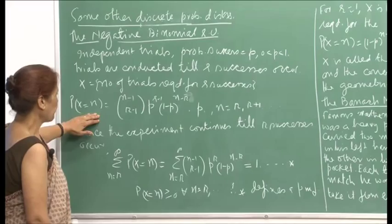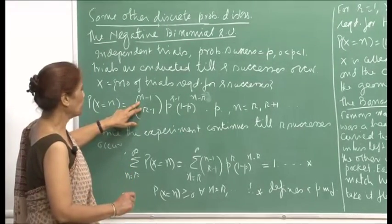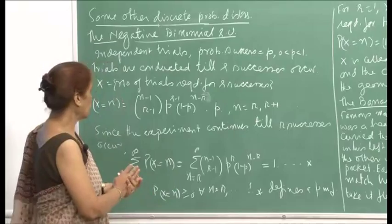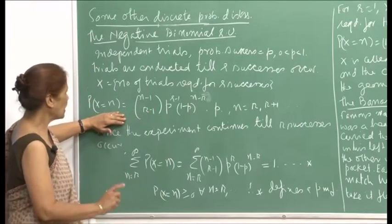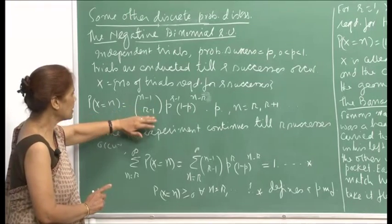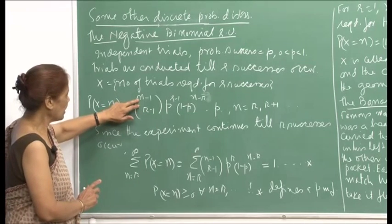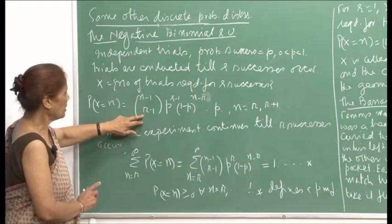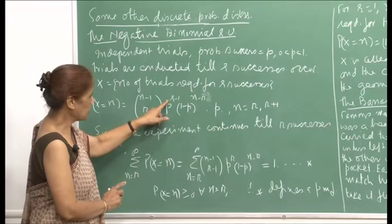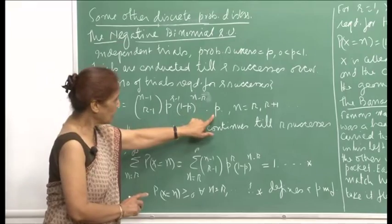The random variable is the number of trials. So probability x equals n — you will stop your experiment the moment you hit the r-th success. Up to n minus 1 trials, if I want r successes to occur in n trials, then up to n minus 1 trials, r minus 1 successes should have occurred. The probability of that is n minus 1 choose r minus 1, using the binomial concept, times p to the r minus 1 times (1 minus p) to the n minus r failures, and then the last one is a success.